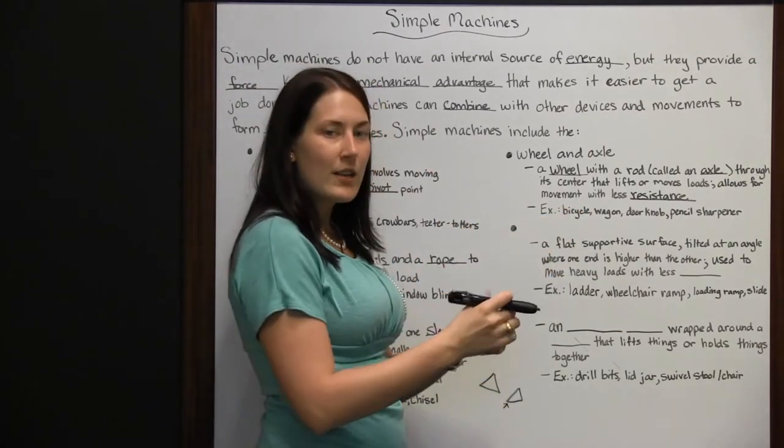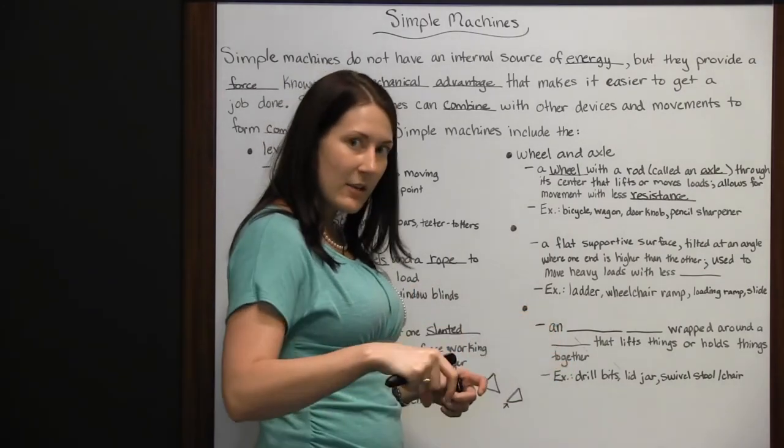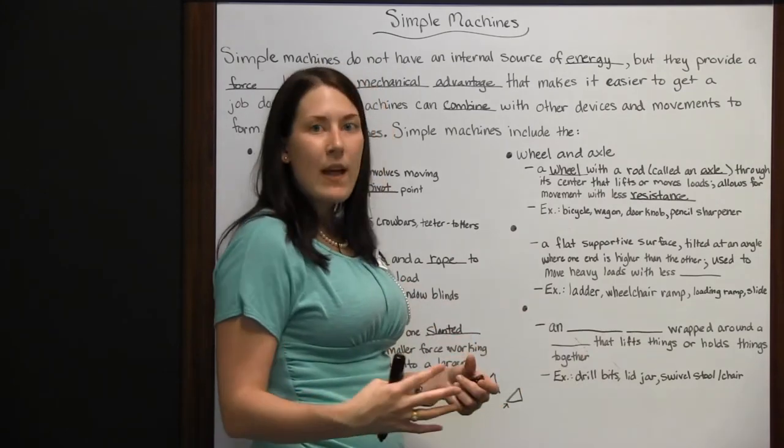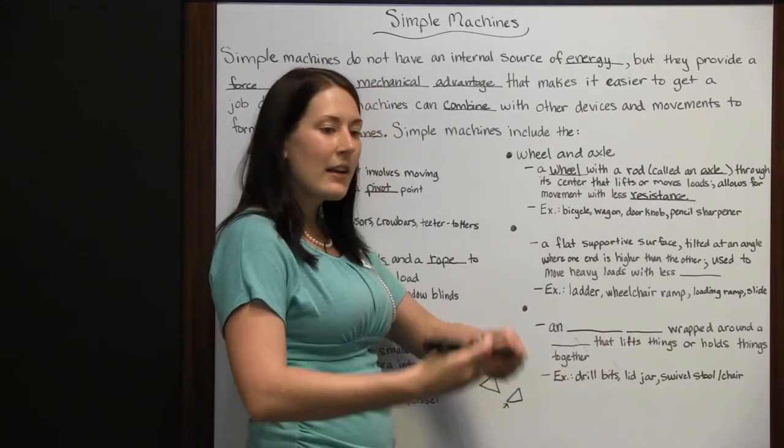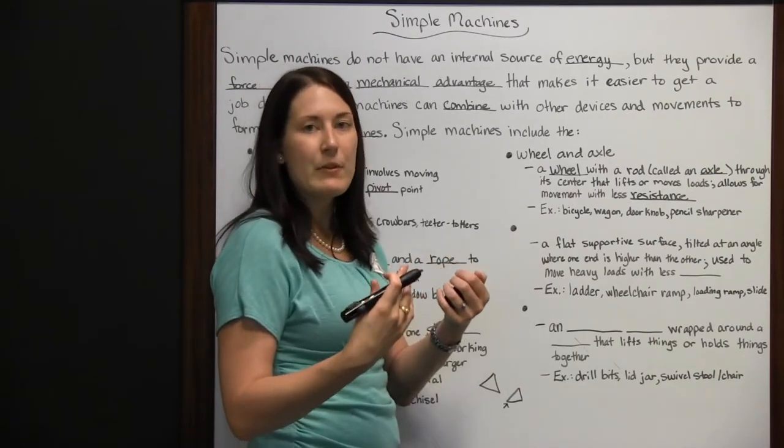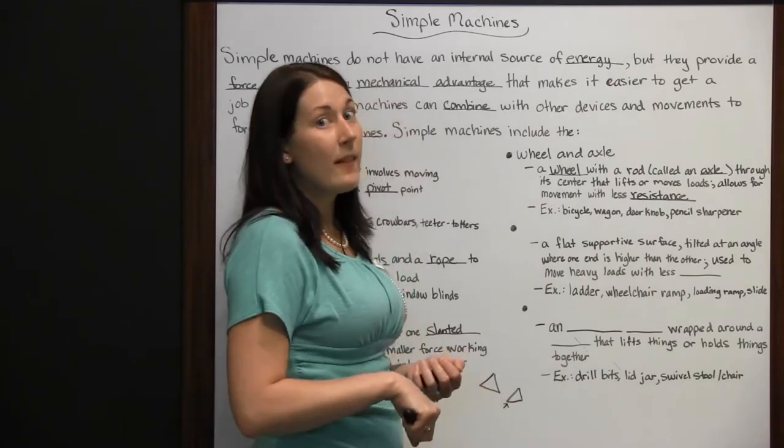Wagon, same thing. You've got two wheels connected by an axle at the front, two wheels connected by an axle at the end, and it lets you move whatever you put in that wagon a lot easier. If you tried to carry an arm load of stuff that weighed 100 pounds, it would be really hard to do. If you put it in that wagon and dragged it along behind you, it would be a lot easier.